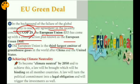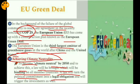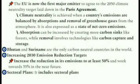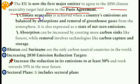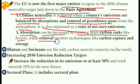The European Union is the third largest emitter of greenhouse gases in the world after China and the US. The EU is now the first major emitter to agree to the 2050 climate neutrality target laid down in the Paris Agreement. Climate neutrality is achieved when a country's emissions are balanced by absorption and removal of greenhouse gases from the atmosphere — also expressed as a state of net zero emissions. Absorption can be increased by creating more carbon sinks like forests, while removal involves technology like carbon capture and storage.